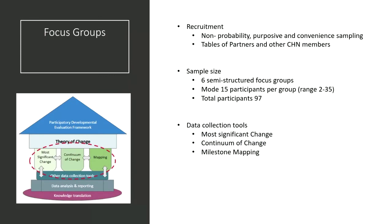We used six focus groups to collect rich qualitative data directly from the CHN tables of partners, using three tools. First was Most Significant Change, a qualitative method described by Davis and Dart that uses stories of community change and impact to collect data that is otherwise difficult to capture. The second tool was milestone mapping, based on process mapping described by Crestwell and Poth in 2017, which identifies key actions that occurred along the way to the change attributed to the CHN's work. The final tool was the continuum of change, which breaks down change into incremental steps and helps identify relevant metrics.